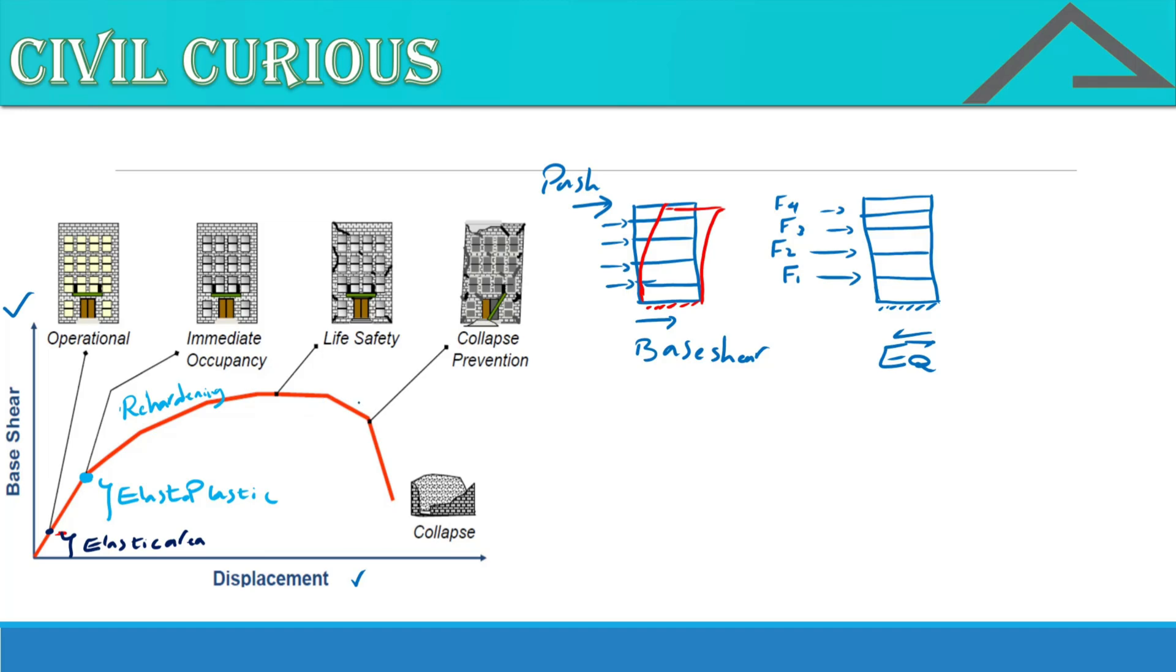And that continues until this point that our system is going to lose the strength of itself. And in this point our structure totally collapsed. That was the base shear versus displacement curve that we call that pushover curve. Now let me learn you the performance level of pushover curve.